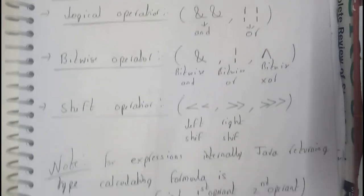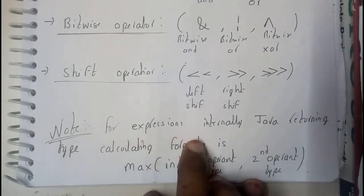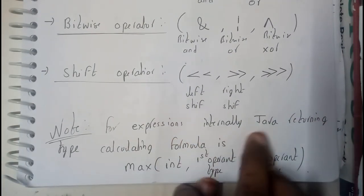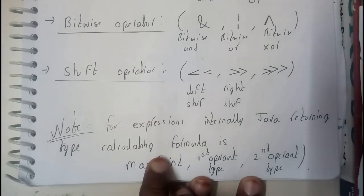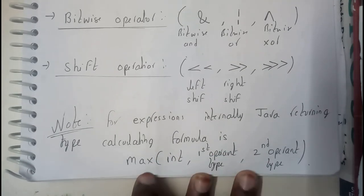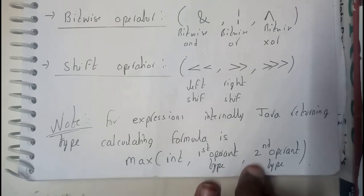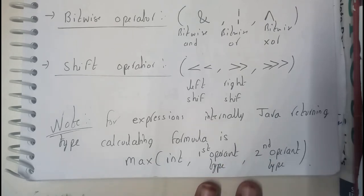So basically, for expressions internally, Java returns type calculating formula is maximum of int, first operand type, comma, second operand type. So in this format, it is going to use the operand size.